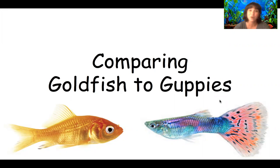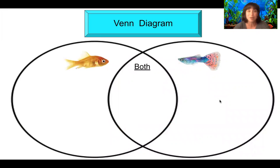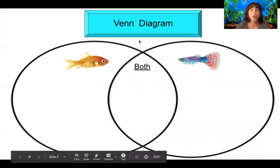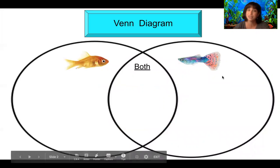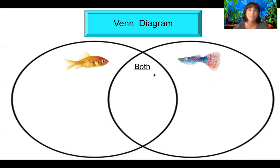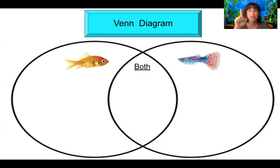Let's take a look at a Venn diagram. One section of the Venn diagram belongs to the goldfish — anything that goes with the goldfish goes in this section. The other oval belongs to guppies — anything that pertains to guppies goes in this section. In the middle, both of the ovals intersect, and this is where we put any information that belongs to both fish. In the box above, we're going to be seeing different words pop up. These words go in either the goldfish section, the guppy section, or both. You're going to be using your pointer finger today to put them in the right spots.